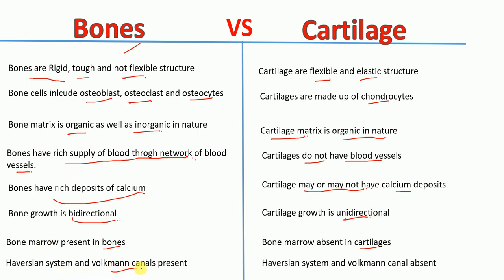Haversian system and Volkmann's canals are present in bones, whereas the Haversian system and Volkmann's canals are absent in cartilage. Thank you.